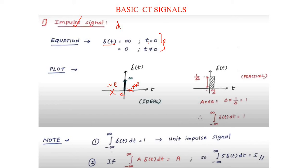At t equal to 0, the signal has infinite amplitude. For all other values of t — both positive and negative — the signal amplitude is 0. This is an ideal case; practically, we will get some finite amplitude values.